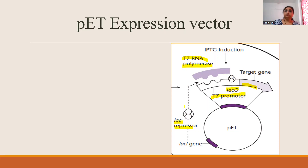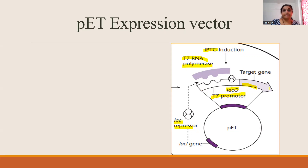When we learned about the LAC operon, the inducer was allolactose. Here, an artificial inducer is used — IPTG. This IPTG mimics allolactose; it binds with the repressor and removes the repressor from the LAC operator, allowing expression of the target gene. When you want expression of the gene, add IPTG to the medium; when you don't want expression, remove the IPTG from the medium.